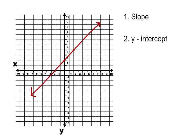If we look at this graph, you can figure out the y-intercept. This line crosses the y-axis at positive 2, so we can say that the y-intercept is (0, 2).